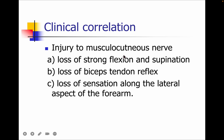If there is any injury to the musculocutaneous nerve, there can be loss of strong flexion and supination, loss of the biceps tendon reflex, and loss of sensation along the lateral aspect of the forearm.